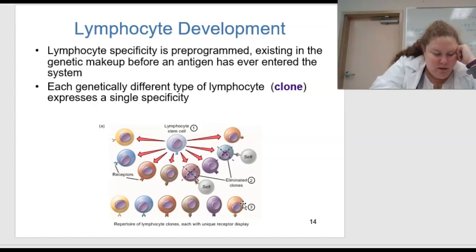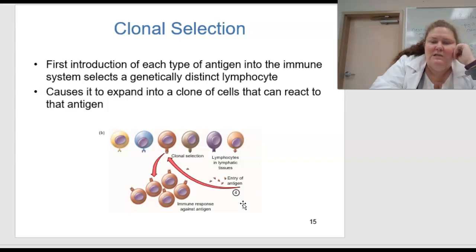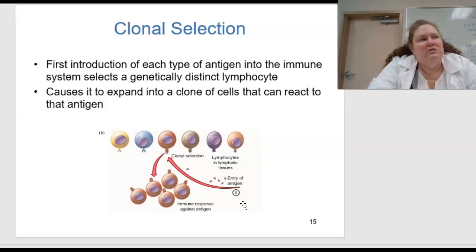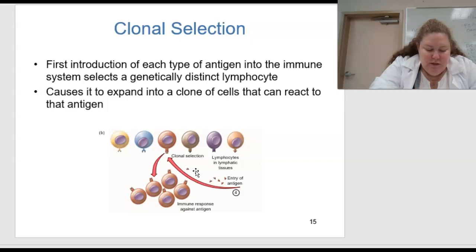In clonal selection, each type of antigen is introduced to the immune system and it selects a genetically distinct lymphocyte, causing it to expand into a clone of cells that can react to that antigen. In the antigen dependent period, the lymphocytes migrate to lymphatic organs where they encounter antigens. Entry of specific antigens selects only the lymphocyte clone or clones that carry matching surface receptors, and this varies according to the type of lymphocyte involved.